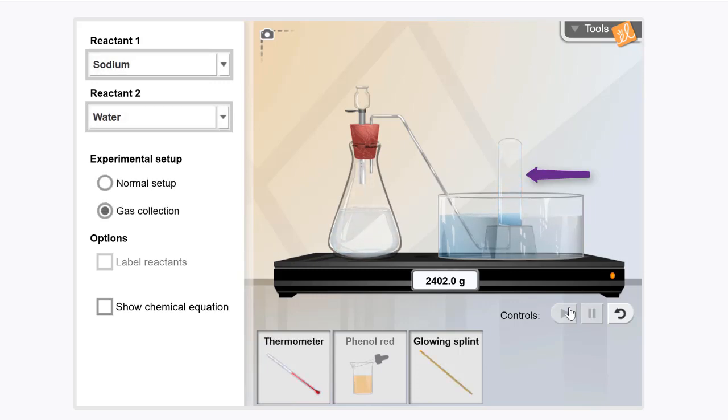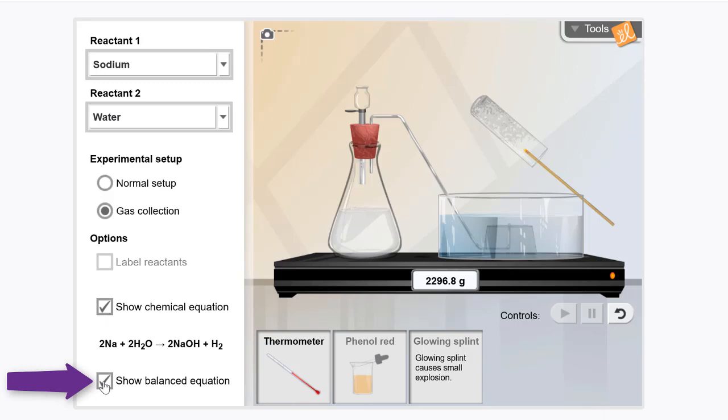I wonder what kind of gas was produced. Let's drag the glowing splint to the cylinder and notice what happens. That small pop tells us it's hydrogen gas. Also, we can click on show chemical equation and balance chemical equation to help provide a description of this reaction.